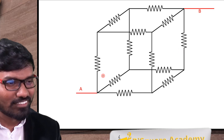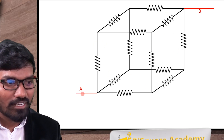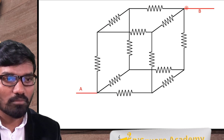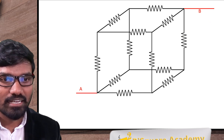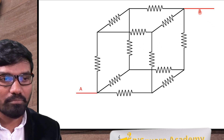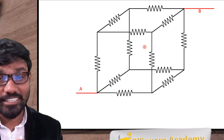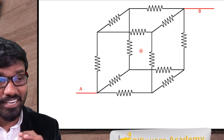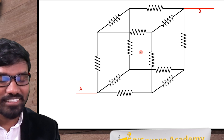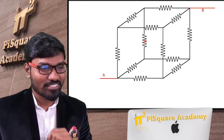Let's get to the question. This is a question where a cube is given, and here the diagonal edges — this edge and this edge — are points A and B. You need to find the resistance R between A and B. You might have encountered this question many times. In most competitive exams, it has come right from IIT JEE till GATE exam. This is the most popular question.